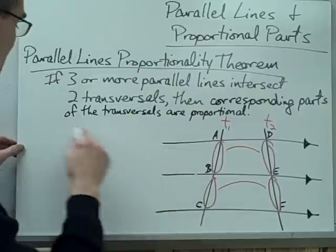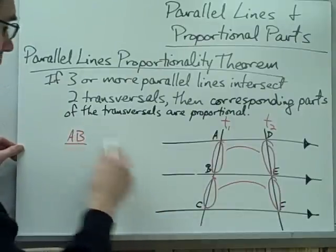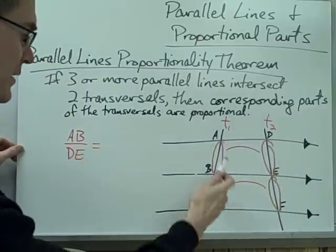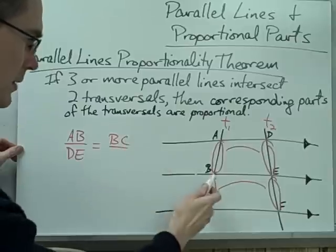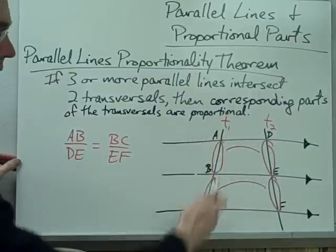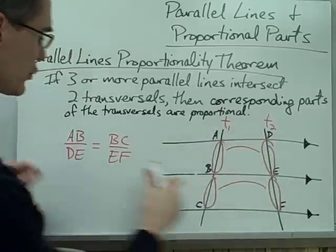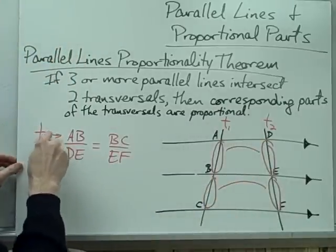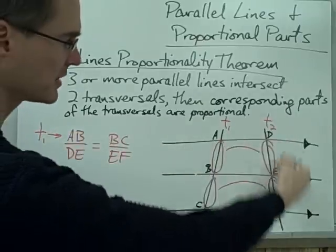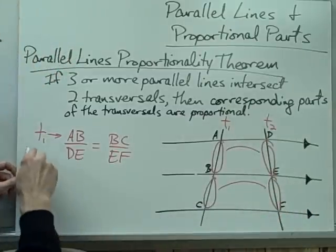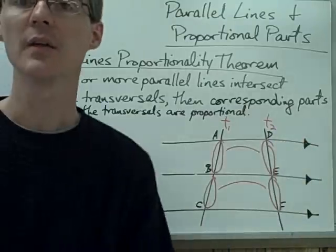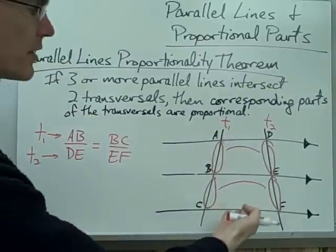In other words, I could write a proportion with them. For example, the length of segment AB corresponds to the length of segment DE, and that's proportional to BC and EF. Notice when you write your proportion, all of the pieces of this first transversal — AB and BC — show up in the numerator. And all the pieces of transversal 2 — DE and EF — show up in the denominator.